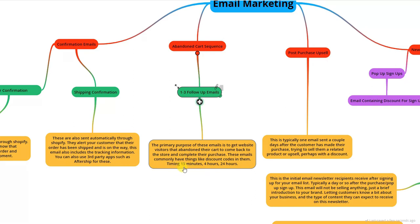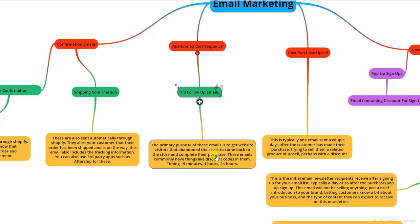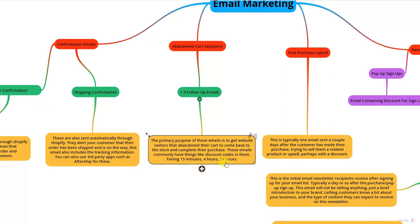These emails normally include discount codes or other incentives to get the customer to come back. For timing, if you have three abandoned cart follow-ups, you could send one after 15 minutes, one four hours later, and the third 24 hours later. You can split test different timings. This is one of the most important parts of email marketing to set up because you can recover a large percentage of your sales.